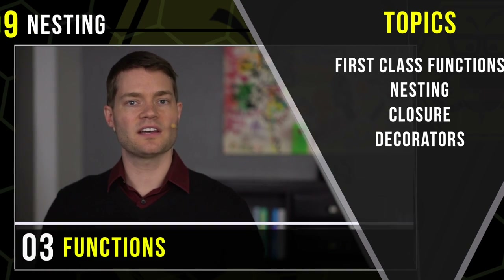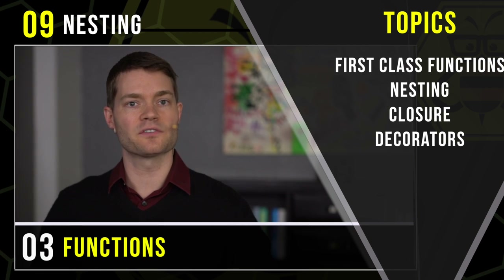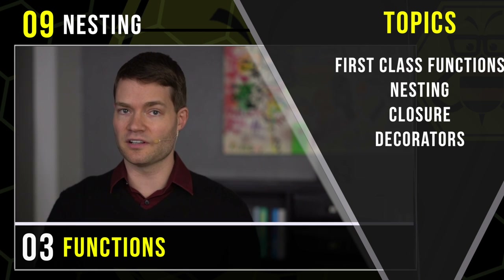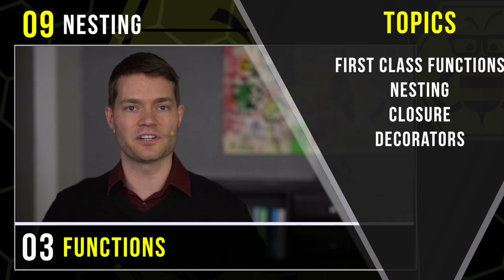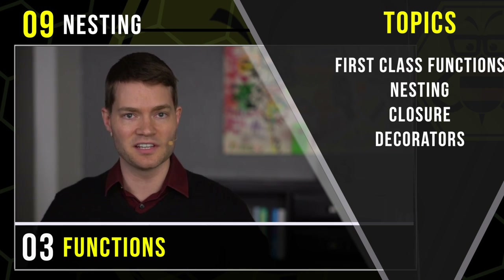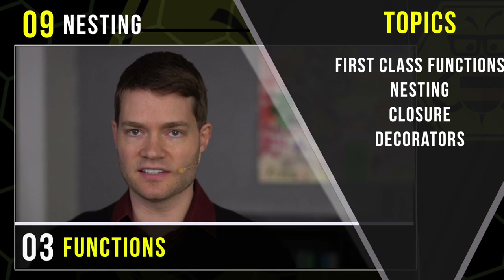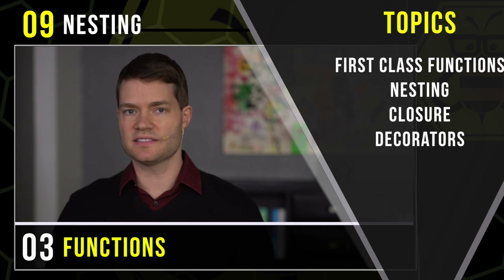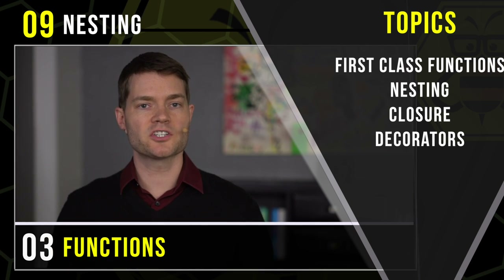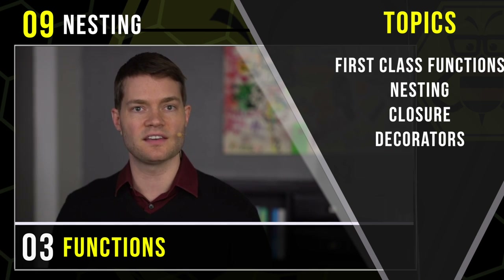To recap: our first mnemonic was a first class seat on a luxury airplane, representing a first class function. We learned that first class functions are all functions in Python because they're all objects, and they come with the powers of objects — being able to be passed into each other and nested inside of functions. Our next mnemonic was a set of Russian nesting dolls, representing the topic of nesting functions. We talked about how a function written without parentheses is treated just like a variable, and when given parentheses, it runs and executes that code and gives you your return.